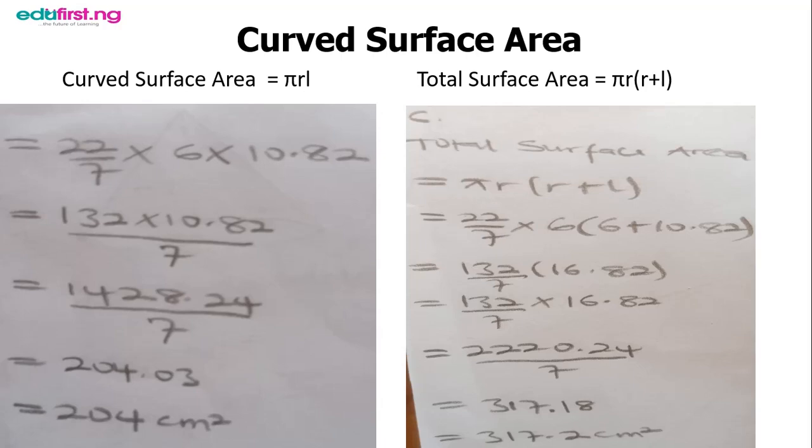As usual, we multiply the numerator together and the denominator. The denominator in this case is just 7.